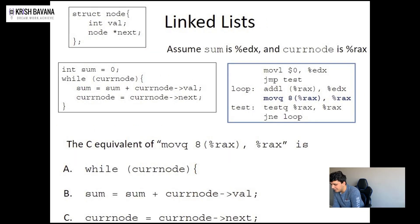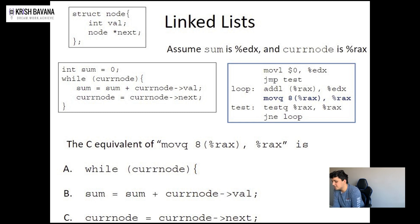Now let's look at the equivalent C code for traversing a linked list so you can compare and understand. We have: int sum equals 0, while current node is not equals to null, sum equals sum plus current node's value, then current node equals current node's next. What we are doing is adding every single value inside each node in the linked list until it reaches null.